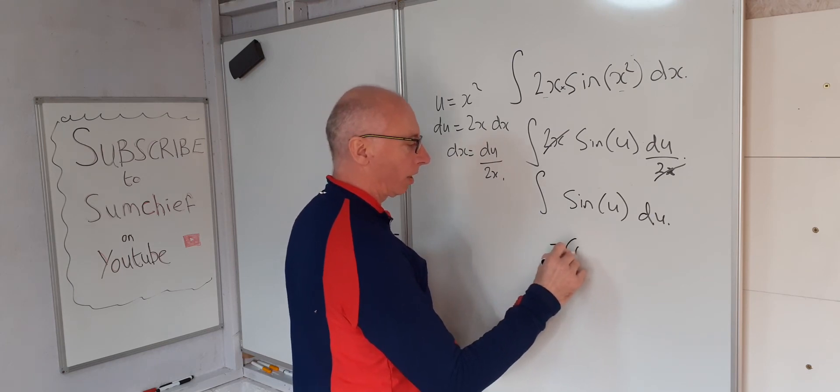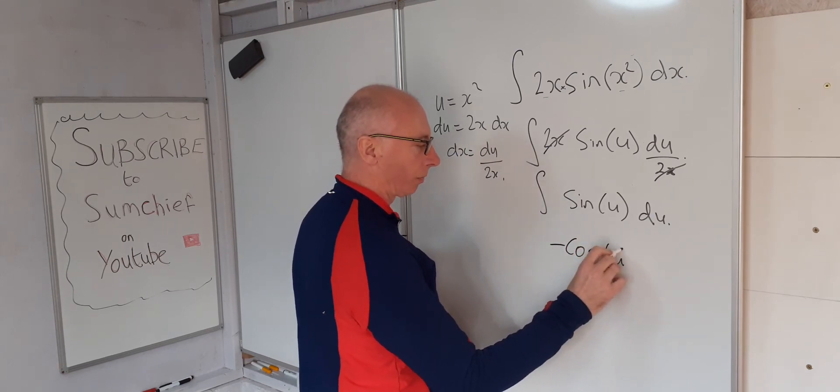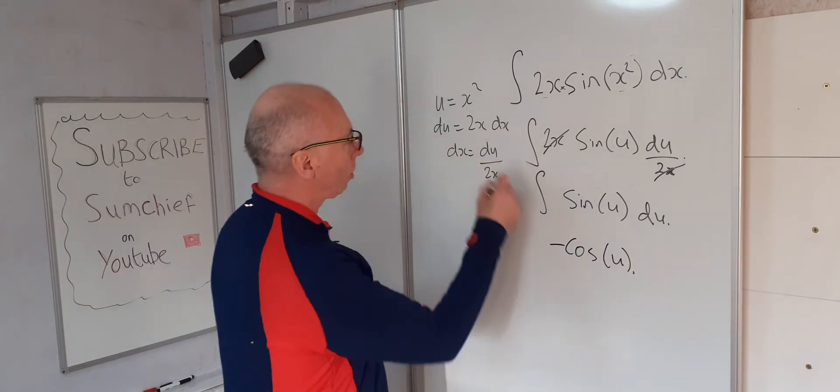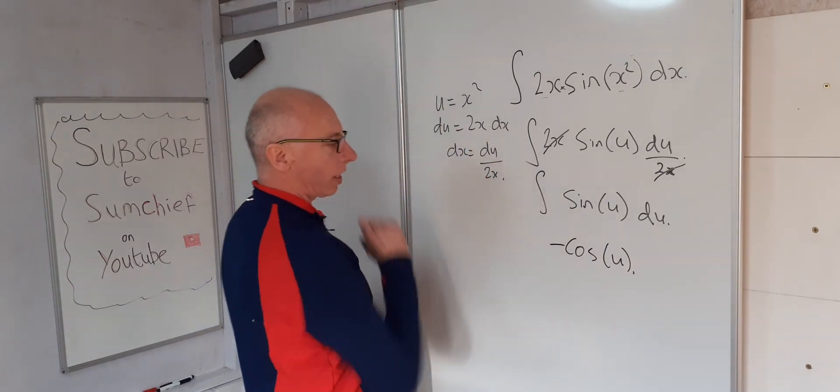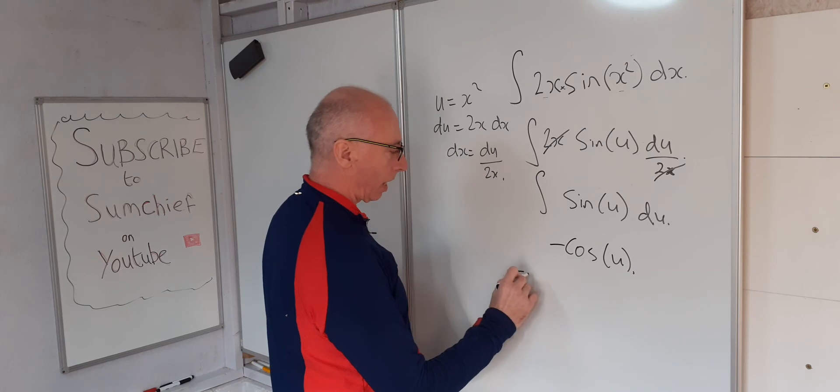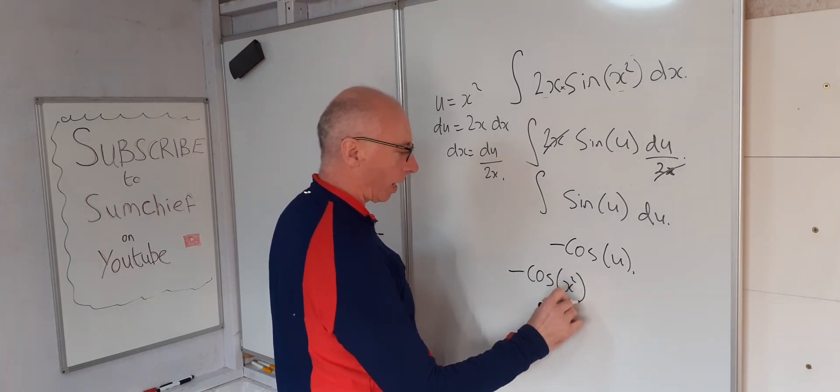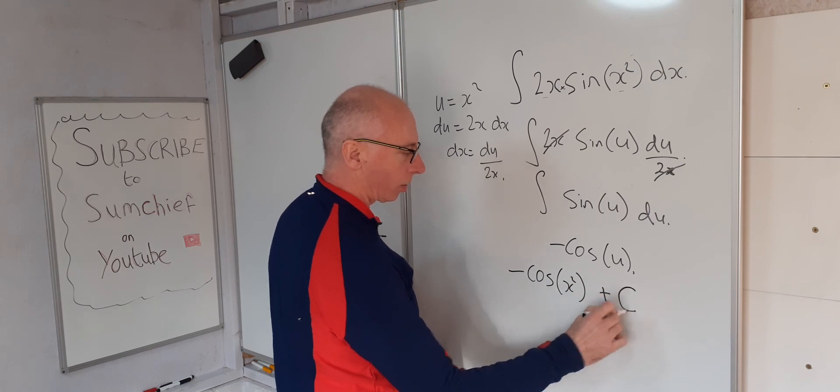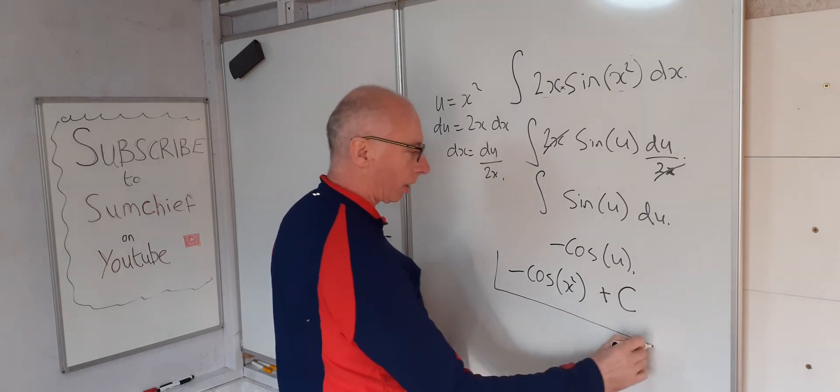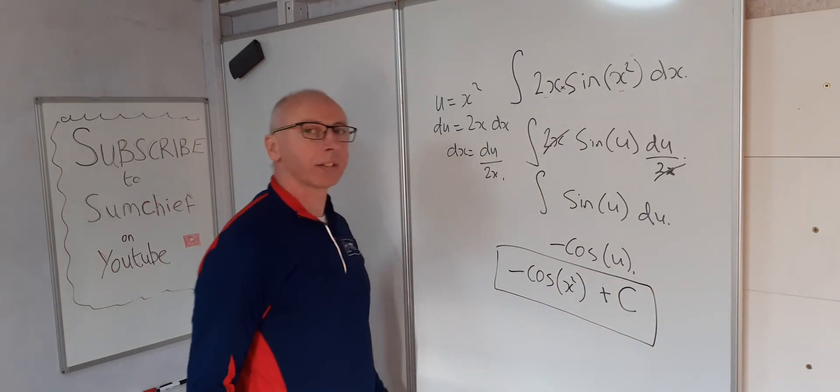Now substitute back in: u is x squared, so we end up now with negative cosine x squared. Don't forget the plus c. There we go, that's the answer.